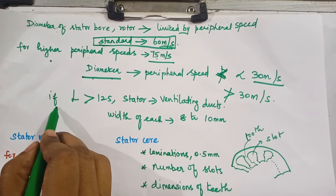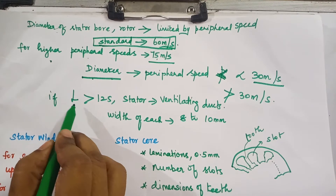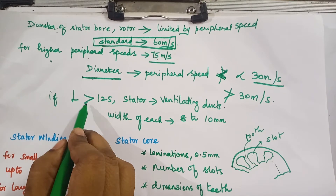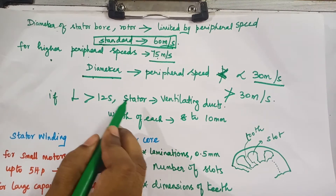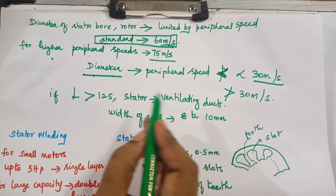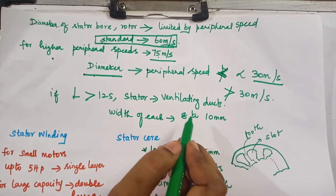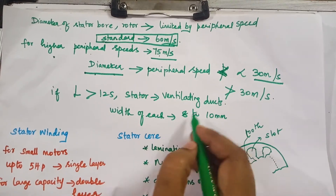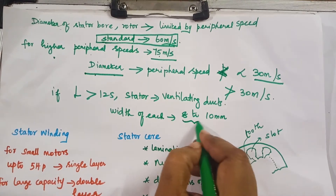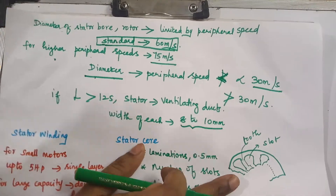If the length of the stator is greater than 125 mm, you have to use ventilation ducts. The width of the ventilation ducts varies between 8 to 10 mm.